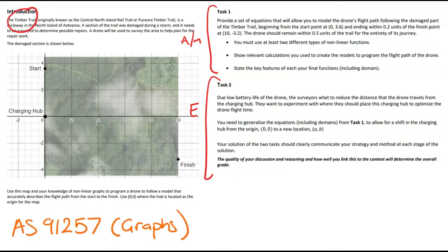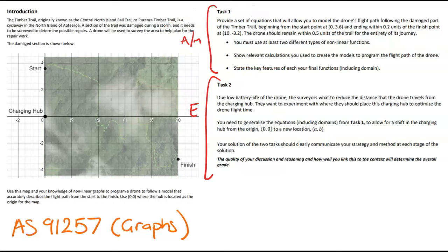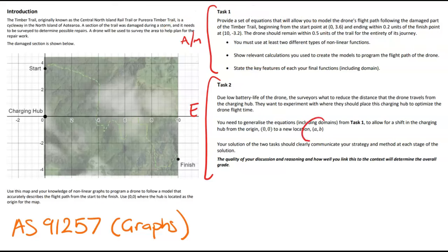Kia ora everyone. We're going through the Timber Trail practice assessment, which is for NCEA Level 2 graphs, mainly for Year 12 calculus classes. I'll give you a chance to pause the video if you haven't read the question. Task number one has all the achieved and merit stuff, and the generalization of point A comma B is what you're looking to generalize for in task two.